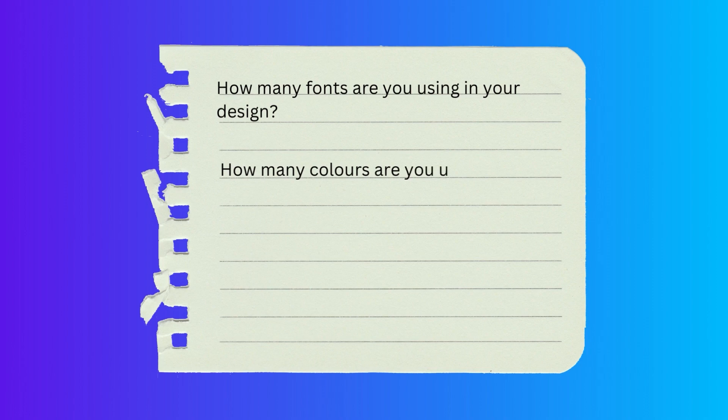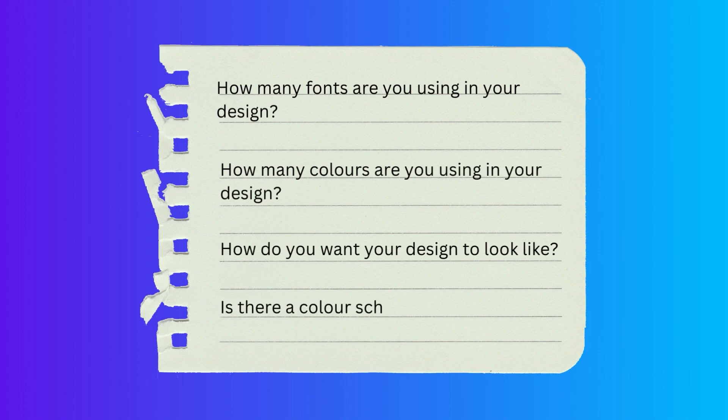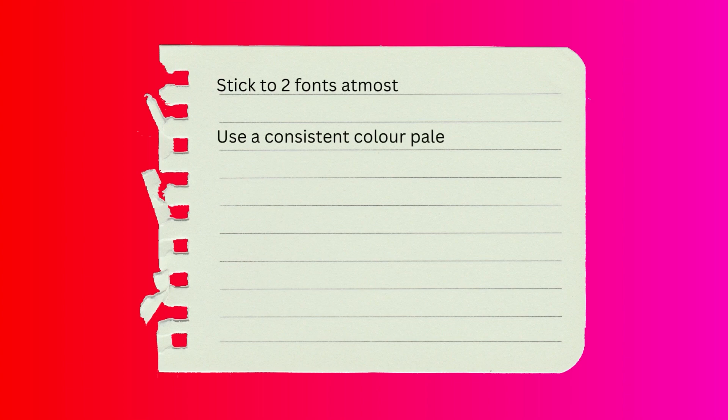Tip number three is maintaining consistency. If you really want your design to have a professional, cohesive look, maintaining consistency is key. This means sticking to specific things — how many fonts you're using, how many colors, what's the look you're going for, and whether there's a color scheme. Stick to at most two fonts, use a consistent color palette, and stick to a particular design style or theme.